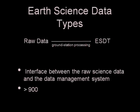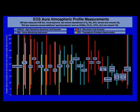An ESDT is not the sort of data type you'd normally encounter in a database — it's more like a procedure for processing a set of measurements, defined by earth scientists. They provide the raw interface between data coming in from the satellite and our data management system. Right now there are more than 900 ESDTs defined that we have to store in the database. The ultimate goal is that atmospheric scientists will use them to create atmospheric profiles and climate change models.